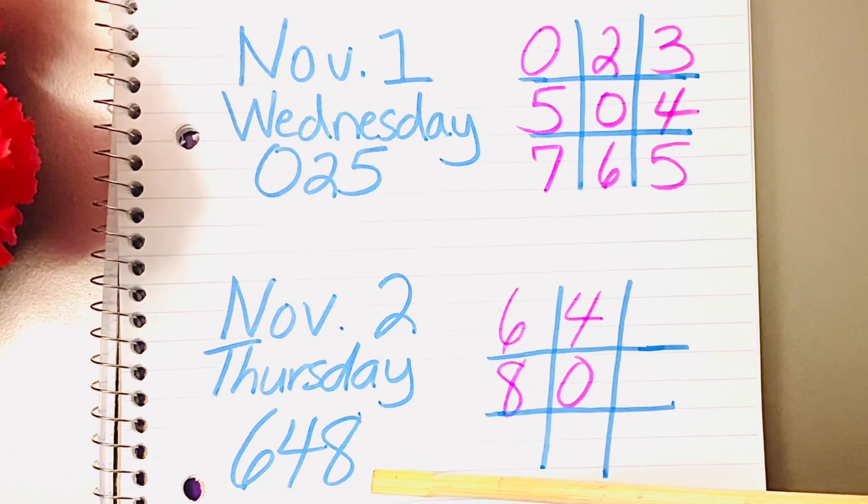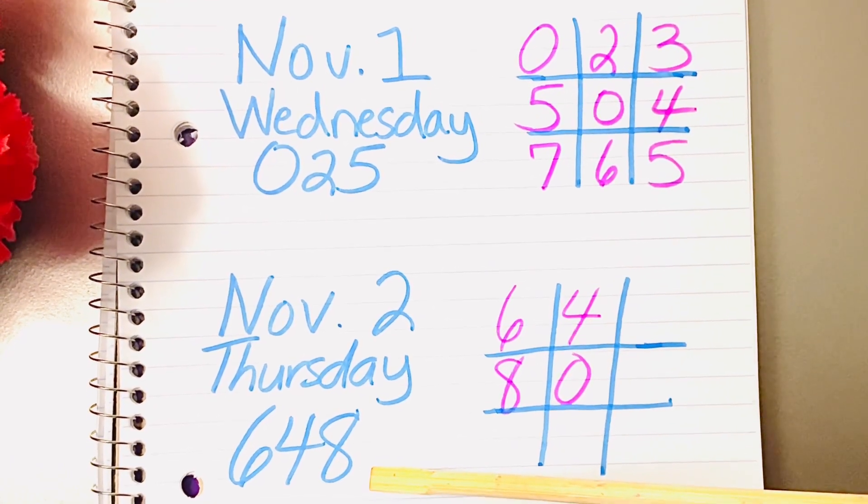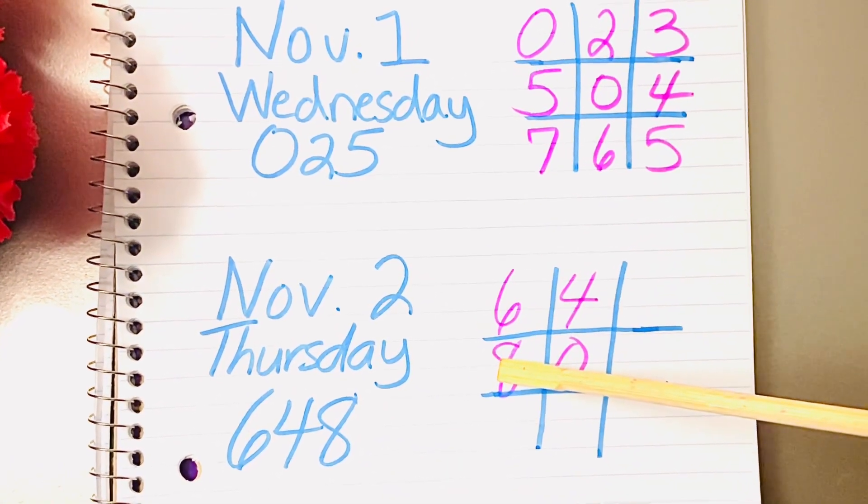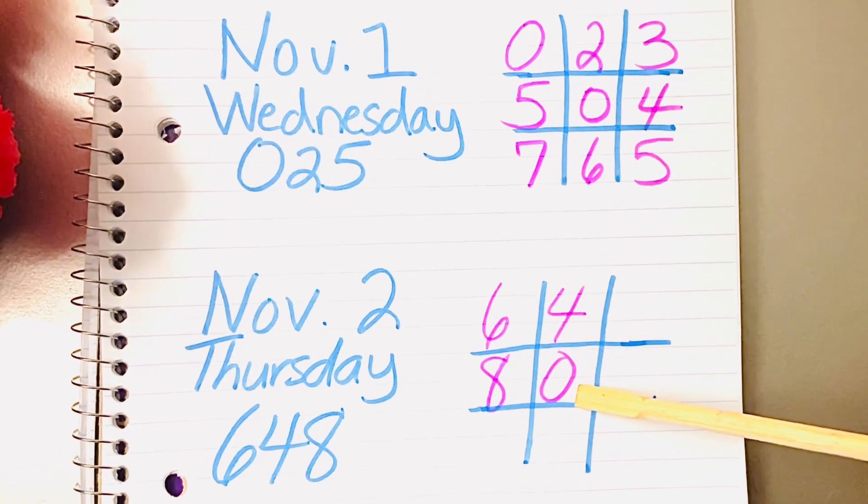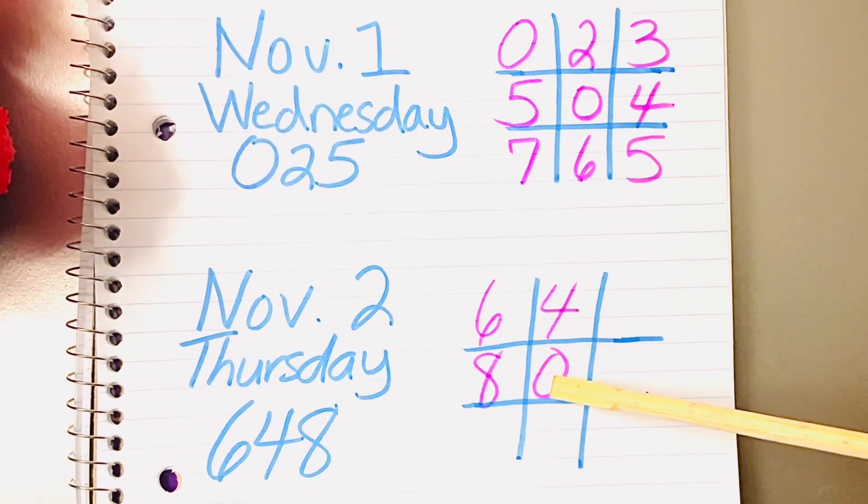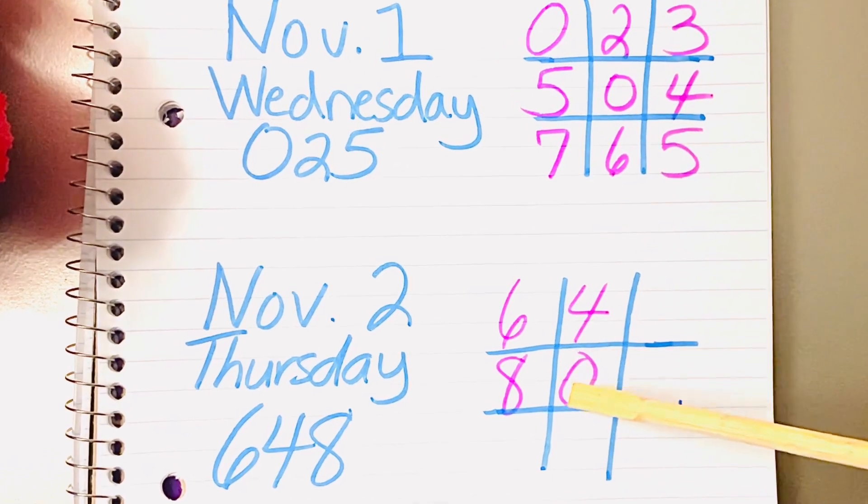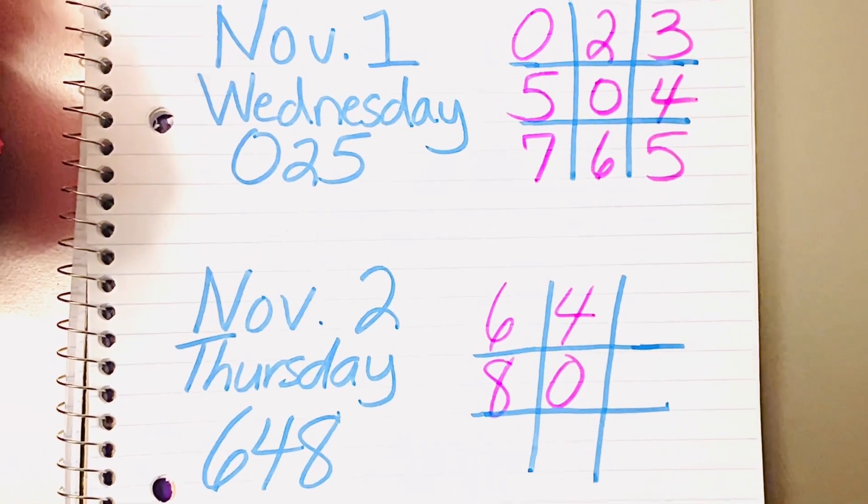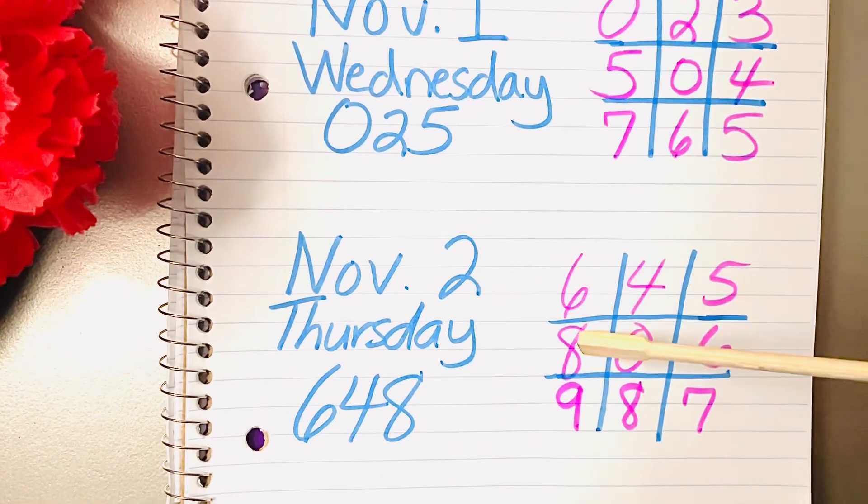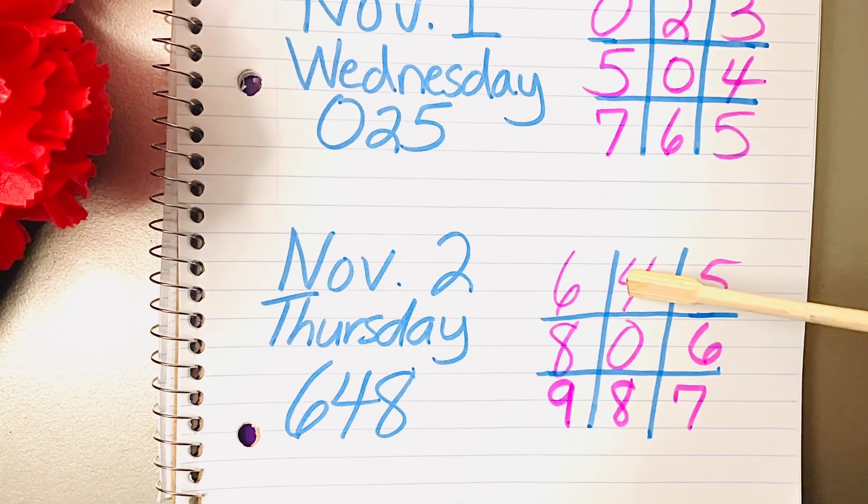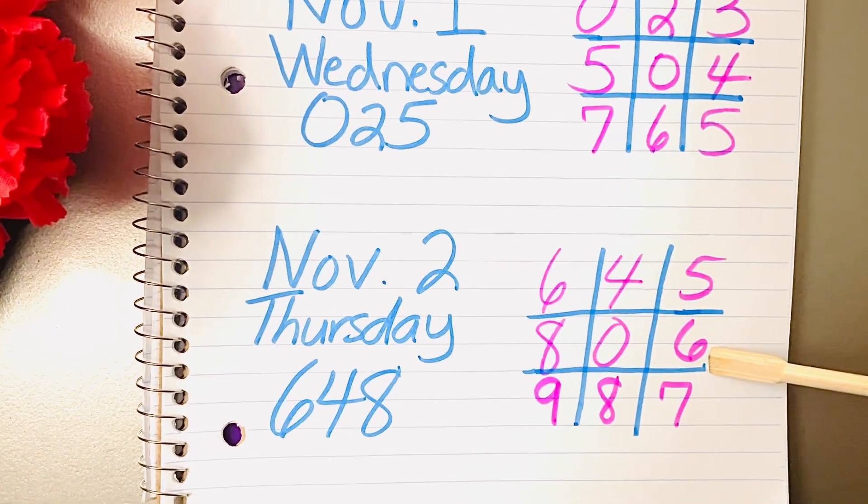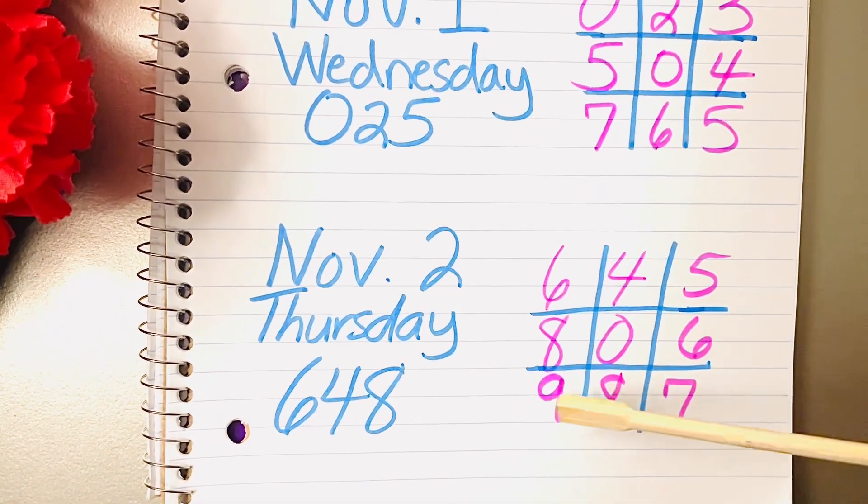So now I'm going to test November 2nd. So on Thursday, we have 648. That's in the grid, 648. And the 0 I put in there for the 4th number. Now we're going to count in order: 4, 5, 6, 7, 8, and 9. That's how I complete the grid.